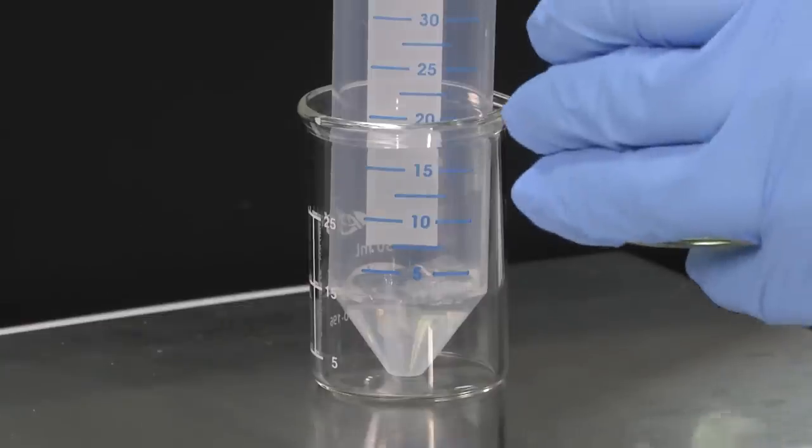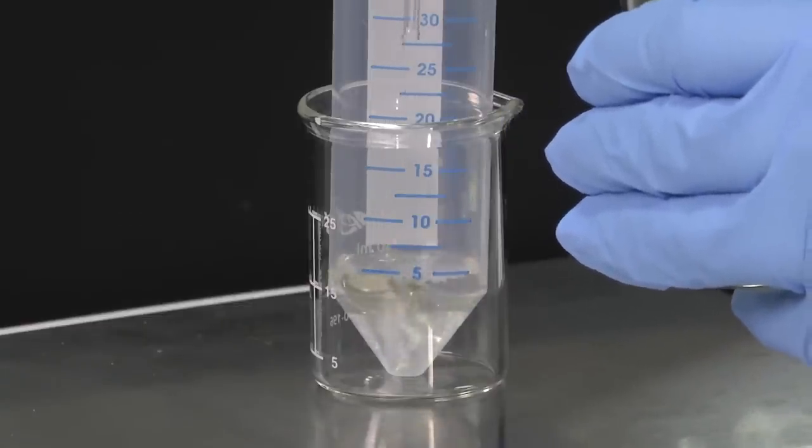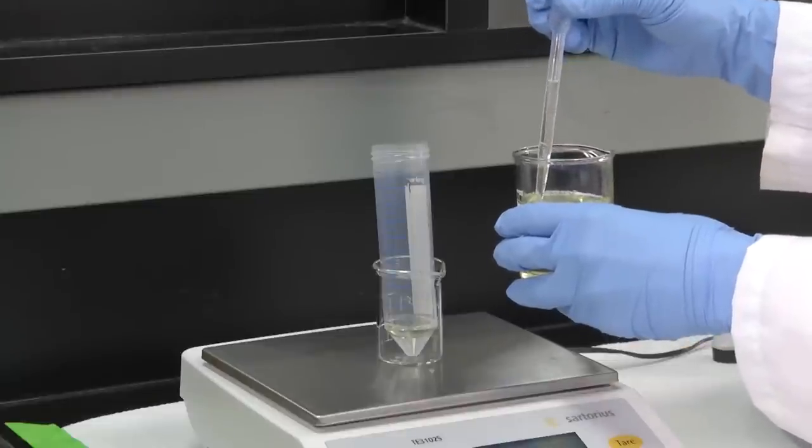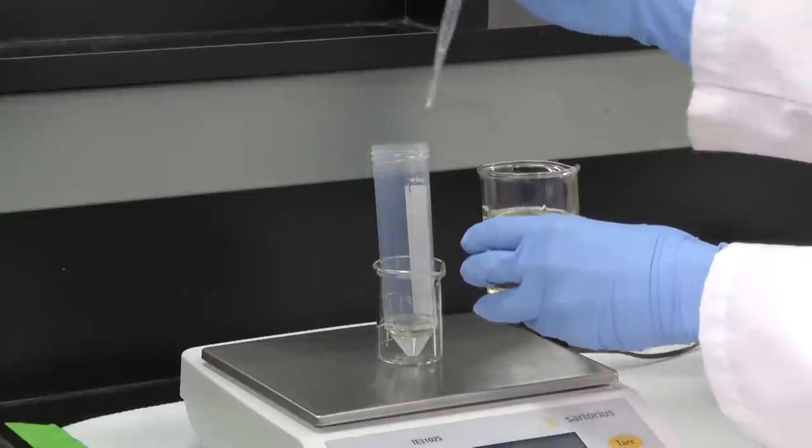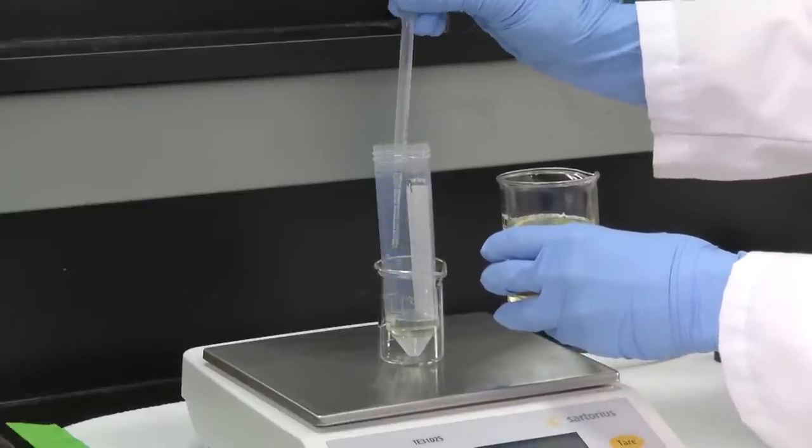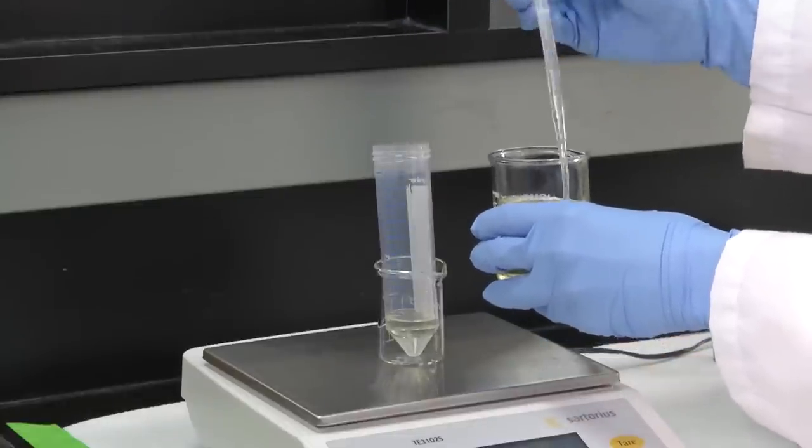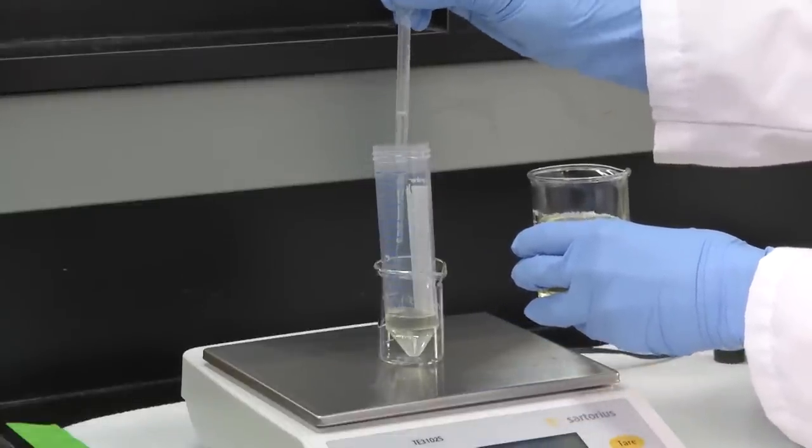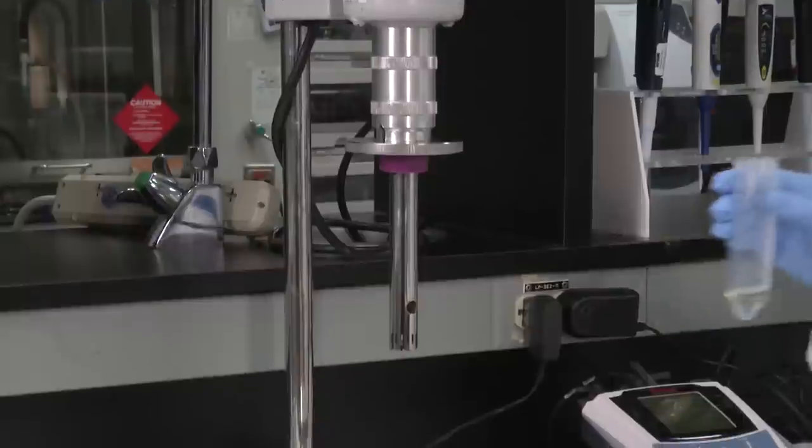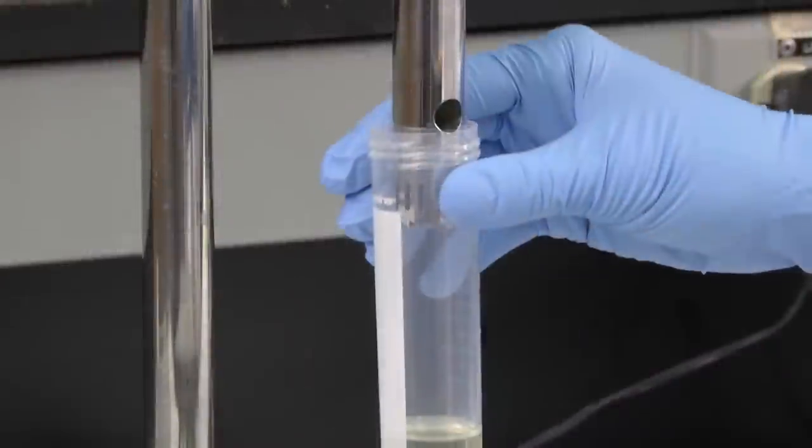For the next emulsion in our series, add 6 grams of oil to 2 grams of protein solution already weighed into a 50 milliliter centrifuge tube. Homogenize for 5 minutes at speed 4.